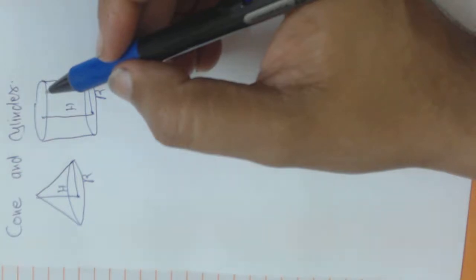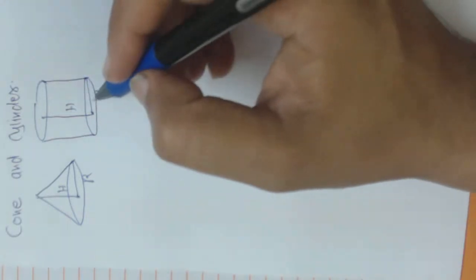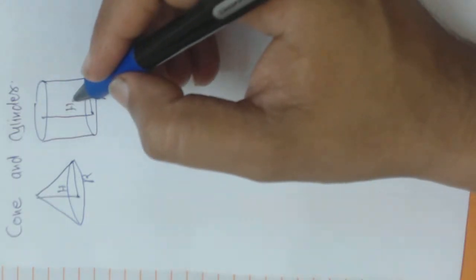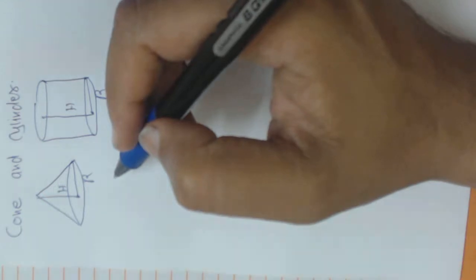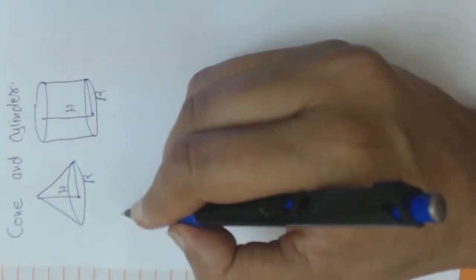Most of the times you will see the questions of surface areas and sometimes it comes out to be in the volume. This is the radius and this is the height of a cylinder, and this is the radius and this is the height of a cone.